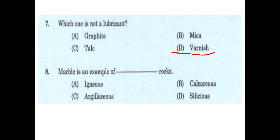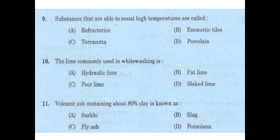Marble is an example of — option B — calcareous rock. A substance that is able to resist high temperature is an example of — option is refractories. Options include: refractories, encaustic tiles, terracotta, porcelain.